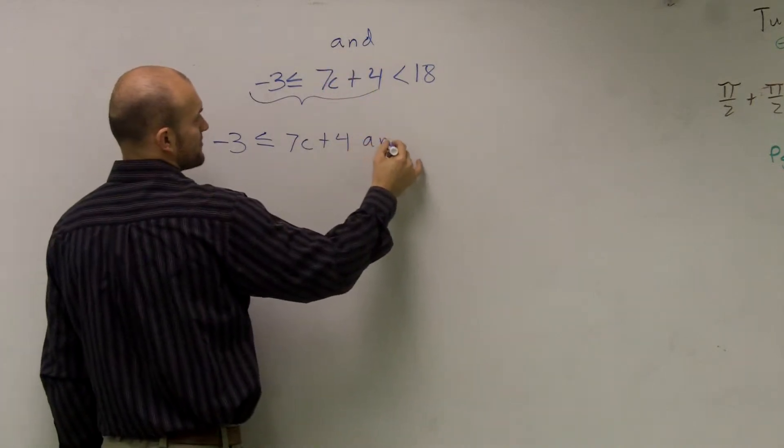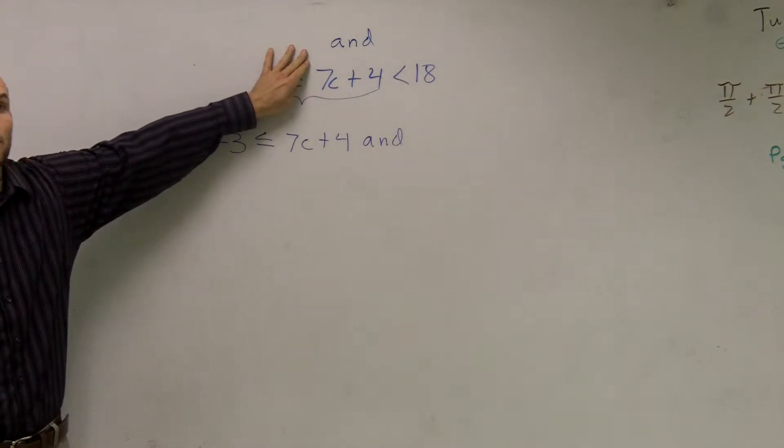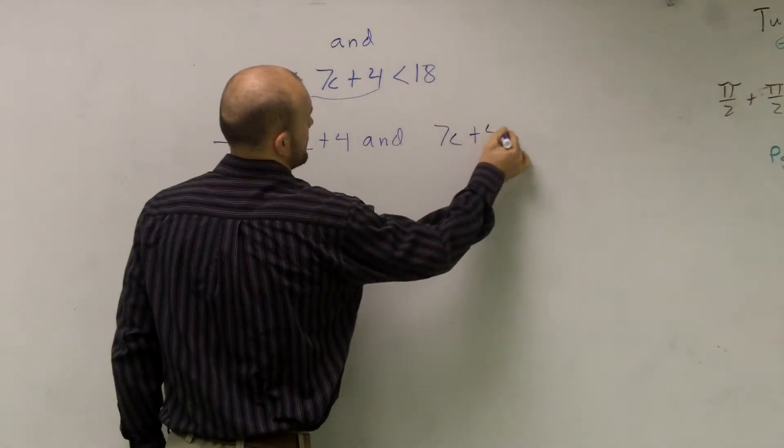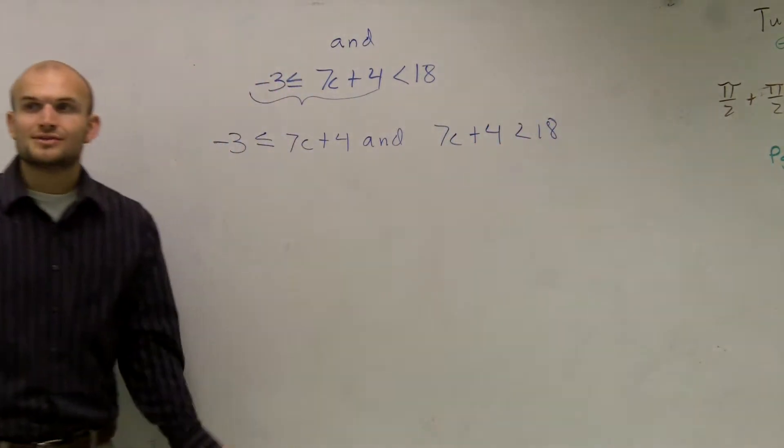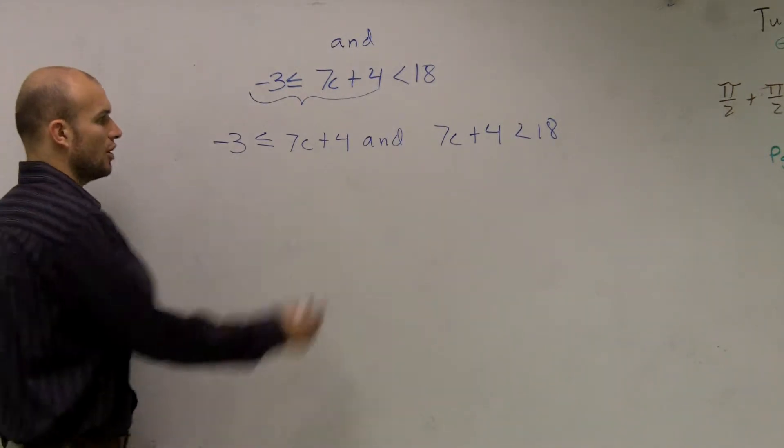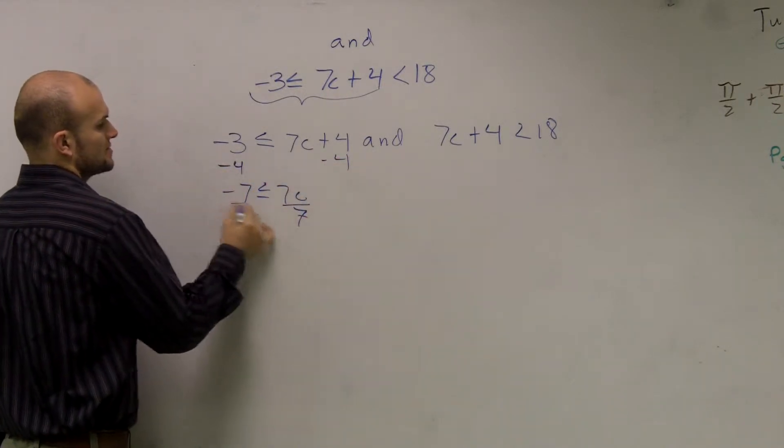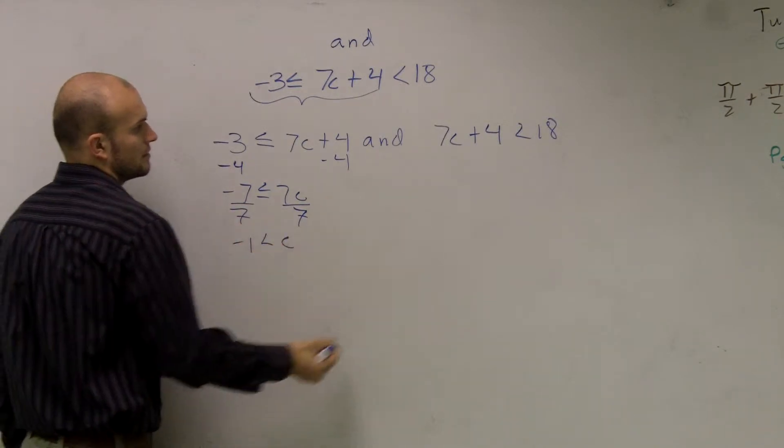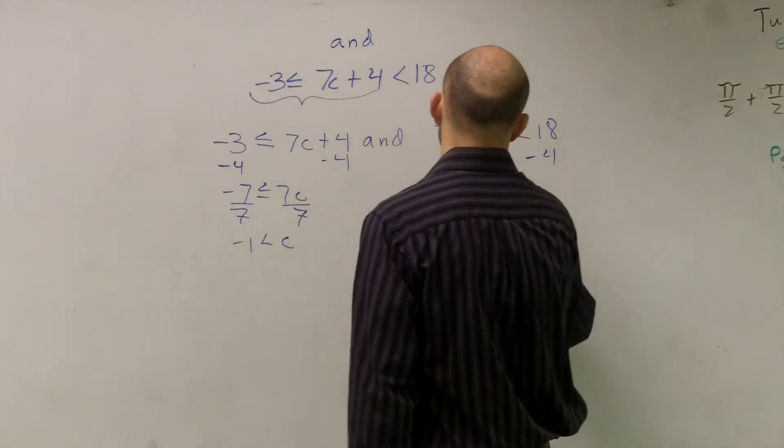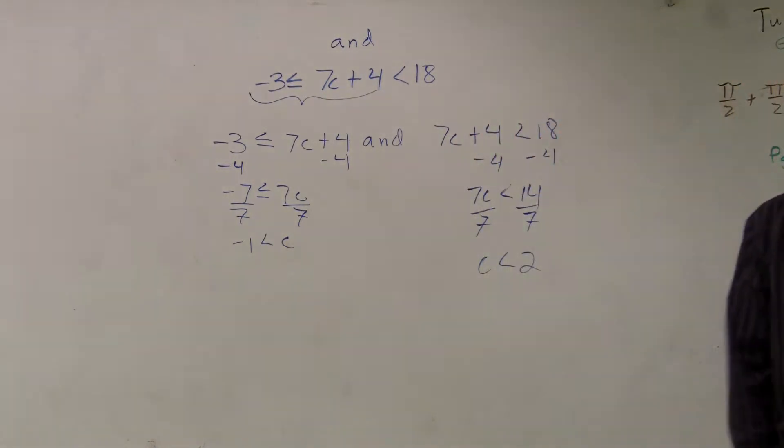I told you 'and.' Then you cover up the other inequality sign, so you're left with 7c plus 4 is less than 18. Then, guess what? It's just like the other problems you guys have been doing. There's no difference. All you do is solve for your variable.